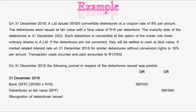On the 31st of December 2018, A Limited issued 35,000 convertible debentures at a coupon rate of 8% per annum. The debentures were issued at fair value with a face value of 16 rand per debenture. The maturity date is 31 December 2022. Each debenture is convertible at the option of the holder into three ordinary shares in A Limited. If not converted, they will be settled in cash at face value. A market-related interest rate for similar debentures without conversion rights is 16% per annum. Transaction costs incurred and paid amounted to 13,000 rand.